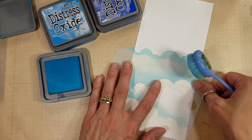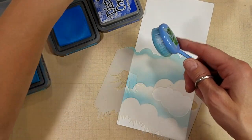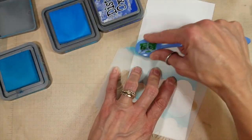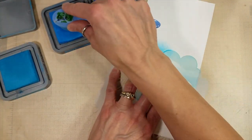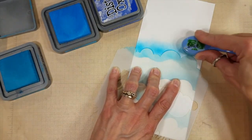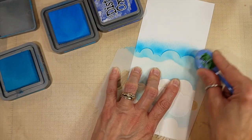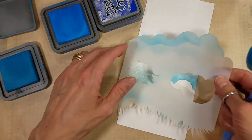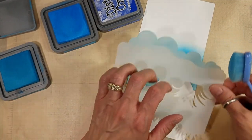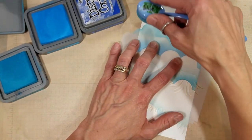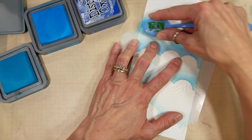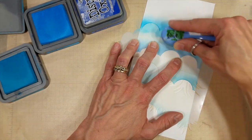so I'm using Mermaid Lagoon, Salty Ocean, and Blueprint Sketch. Just getting darker as we get towards the top. And I'm flipping that cloud stencil front and back and tilting it this way and the other trying to create some variety in the cloud shapes. And I don't clean the brush between.